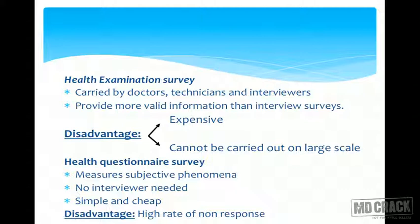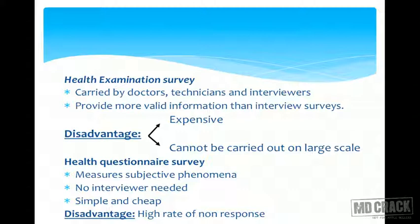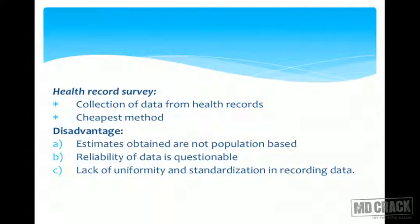The health questionnaire survey is exactly what it says: you hand people a questionnaire and they fill it in and return it. It measures subjective phenomena; no interview is needed, making it simple and cheap. The disadvantage is that follow-up or response may be poor — people might not return it. Health record survey involves collection of data from health records maintained over the years; it is the cheapest method.